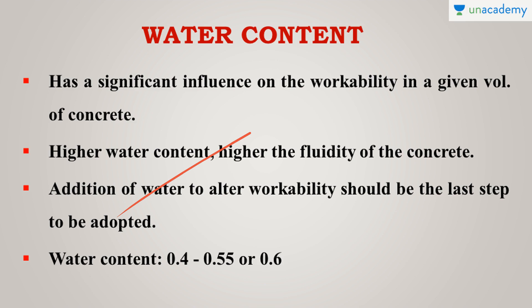If more water than needed has been added, we must balance it by adding an additional amount of cement to the mix so that the water-cement ratio is restored. In normal concrete — not high-performance or high-strength concrete — the water-cement ratio should typically be in the range of 0.4 to 0.55 for workable concrete.